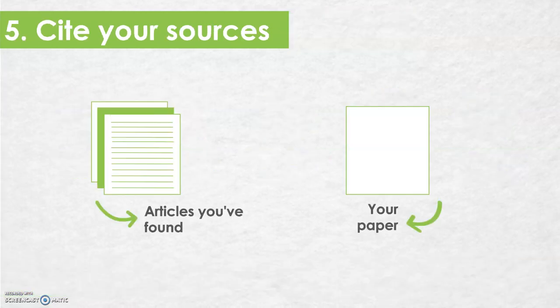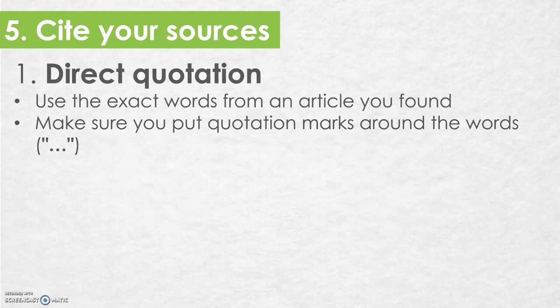So you've found some good quality information. How do you get that information into your research paper or into your provincial resources assignment? Well, there are a couple of different ways that you can do this. The first way is by using a direct quotation. If you really like the author's words in an article that you've found, you can use those exact words in your research paper, but you have to make sure that you put quotation marks around those words to show that they're not your words — they're someone else's words.